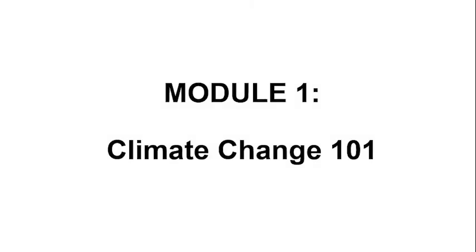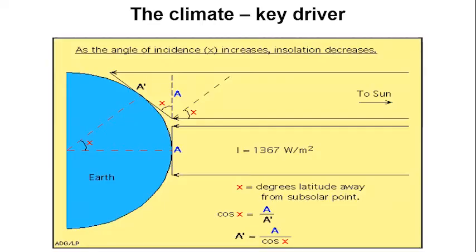Let's go directly into Module One — I call it Climate Change 101. Let's remember that we have the sun, and the sun is the key driver for all the energy and all life that we have on Earth, which is very good because the sun is so trustworthy. The sun is our sole provider of energy — about 99% of all the energy and heat we get on the surface of the Earth comes from the sun.